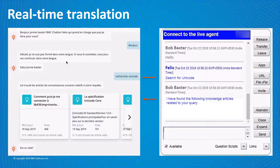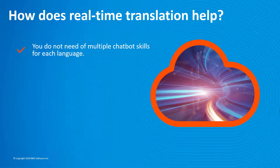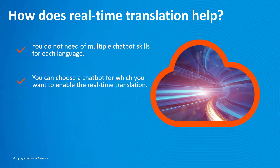Now, how does real-time translation help you? You only need to add new locales to the skill you have already created, instead of creating multiple chatbot skills for each language. If multiple chatbots already exist, you can choose a chatbot for which you want to enable the real-time translation.